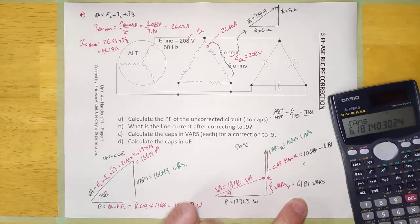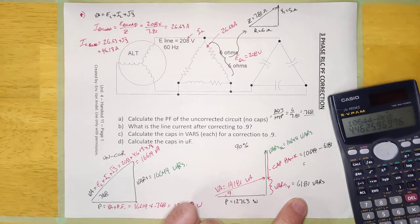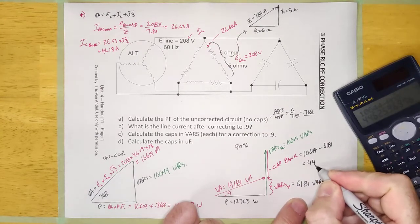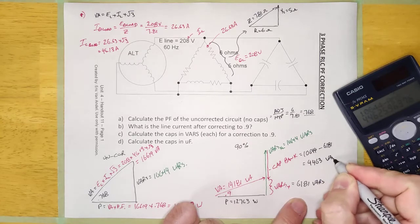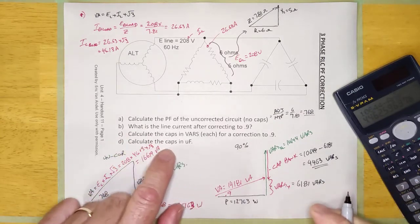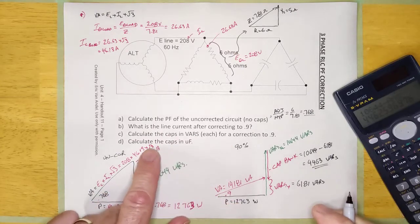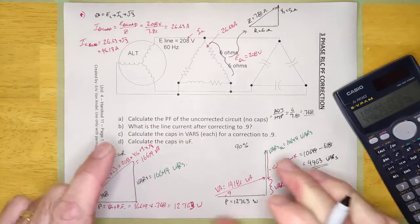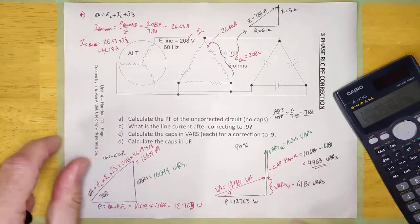Let's do that. 10,644 minus that. Looks like it's 4,463 VARS. That's the whole bank. And maybe I have enough information to answer these questions now because I've completed both phaser diagrams.